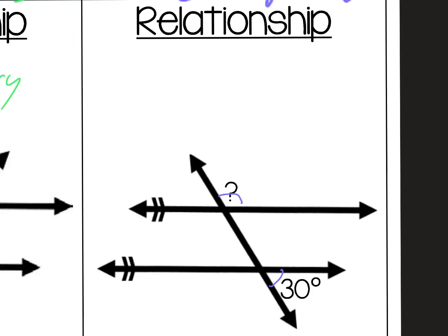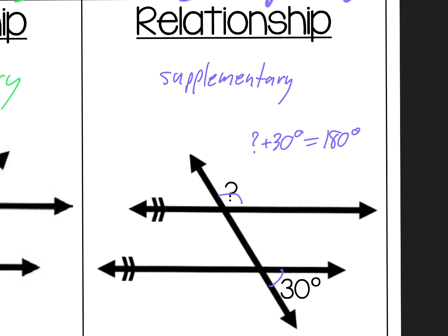The mystery angle and 30 degrees are same side exterior angles. Notice that the mystery angle is obtuse but 30 degrees is acute. That means our angles will be supplementary — they will add up to 180 degrees. So the mystery angle plus 30 degrees equals 180 degrees. All we have to do is subtract 30, and we're left with the mystery angle being 150 degrees.